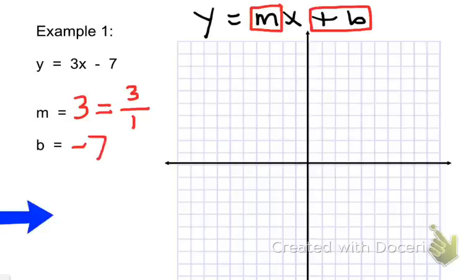b is the starting point on our graph, so we're going to go to the y-axis. b is where does the line cross the y-axis. And in this equation, it crosses at negative 7. So I'm going to count 7 below the origin: 1, 2, 3, 4, 5, 6, 7. And I'm going to put a point on the y-axis at negative 7.